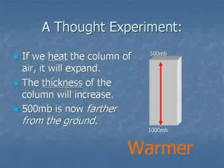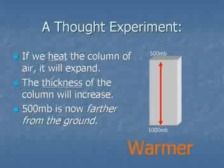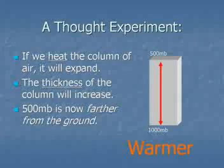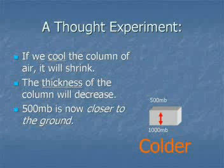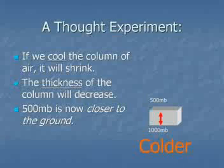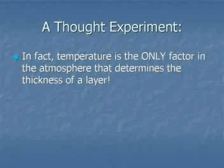What would happen to that column of air if we were to heat it? The box would expand. Assuming the bottom is near the surface and has nowhere to go, the top of the box will rise as the whole column expands. This means the 500 millibar surface is now farther from the ground — the thickness has increased. Conversely, if we cool the box, it shrinks, the 500 millibar surface gets pulled down, and the thickness decreases. Only temperature is able to control the thickness of a layer — an important truism for later atmospheric science courses.